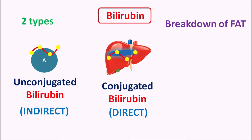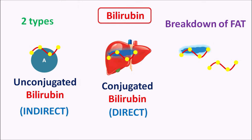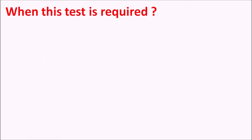In the bilirubin test, we can estimate both unconjugated as well as conjugated bilirubin, and this total amount is called total bilirubin. Now let us see when this test is required — that is, when bilirubin levels are elevated.